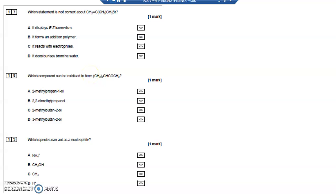Question 17. Which statement is not correct about that chemical? It's got a carbon-to-carbon double bond, it's got a branch chain, it's got a Br on there. So let's have a look. It displays EZ isomerism.